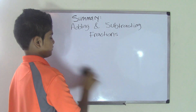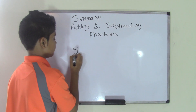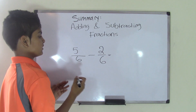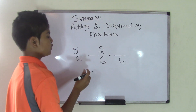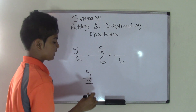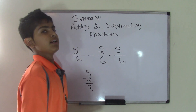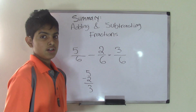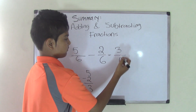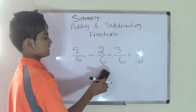Now let's do subtracting fractions with common denominators. For example, five over six minus two over six. Same rule applies: we don't subtract the denominators, we just copy it down as six. We do subtract the numerators: five minus two is three. So we write three over six. Remember, you'll sometimes be asked to simplify your answer — three over six simplifies to one-half. So our final answer for five-sixths minus two-sixths is one-half.